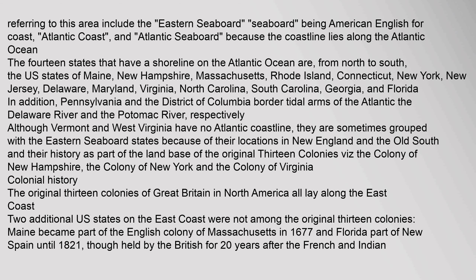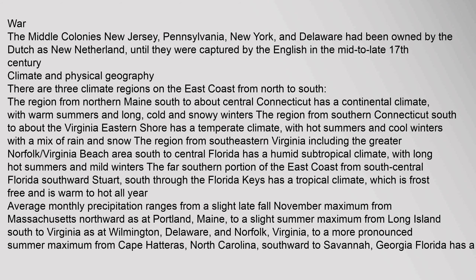The original 13 colonies of Great Britain in North America all lay along the east coast. Two additional U.S. states on the east coast were not among the original 13 colonies: Maine became part of the English colony of Massachusetts in 1677, and Florida was part of New Spain until 1821, though held by the British for 20 years after the French and Indian War. The middle colonies — New Jersey, Pennsylvania, New York, and Delaware — had been owned by the Dutch as New Netherland, until they were captured by the English in the mid to late 17th century.